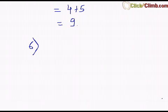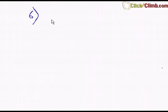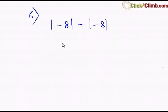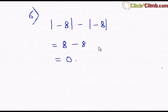The last example: I subtract the absolute values of two same numbers — absolute value of negative 8 minus the absolute value of negative 8. Absolute value of negative 8 is 8, minus absolute value of negative 8 is again 8. So 8 minus 8 gives 0. When subtracting the same values, you always get 0, even with absolute values. That's all for absolute values — keep enjoying the sessions!